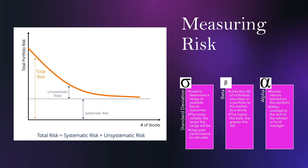Next, we are going to look at beta. Beta links the risk of individual securities or a portfolio to the market as a whole — the higher the beta, the greater the risk. For example, if you have a beta of 1 and the market increases by 10%, your portfolio will increase by 10% as well. If the beta is 2, then if the market increases by 10%, your portfolio will theoretically increase by 20%. If it's 0.5, it'll increase by 5%. So beta really does link that risk to the market returns — a higher beta is more volatile, but it amplifies the returns of the market.